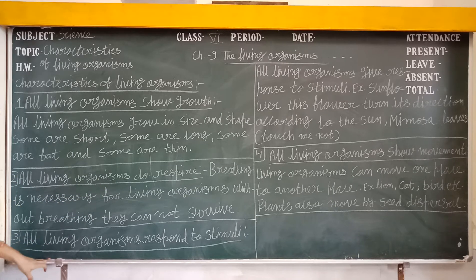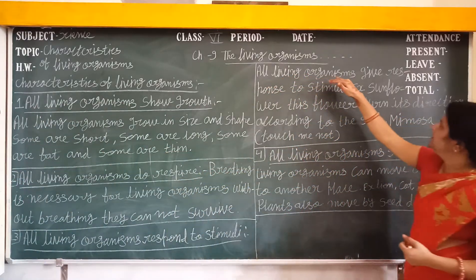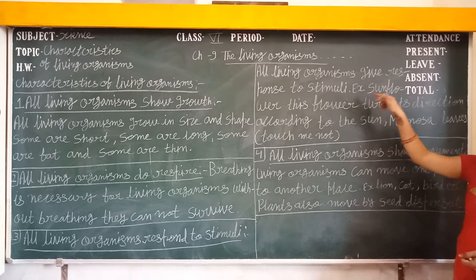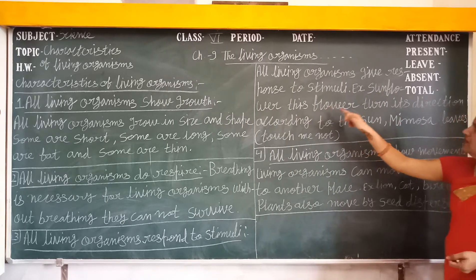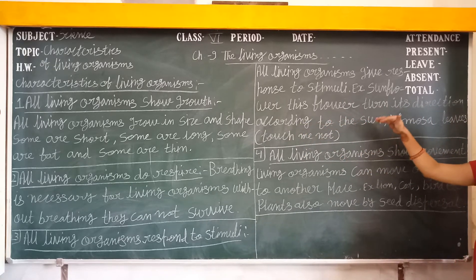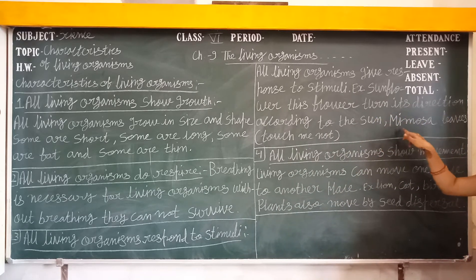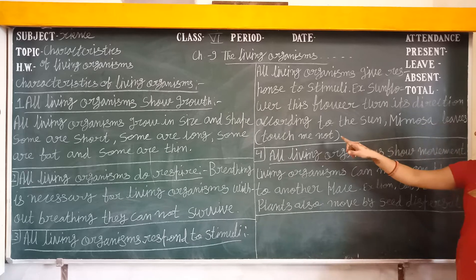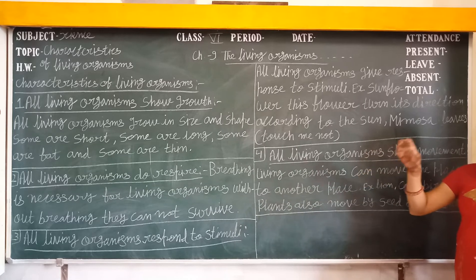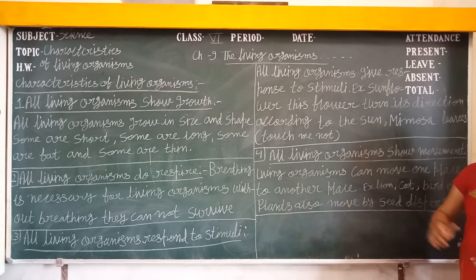Next, all living organisms respond to stimuli. For example, sunflowers turn their direction according to the sun, so we can say that living organisms respond to stimuli. Another example is mimosa, also known as 'touch me not.' When we touch its leaves, it shrinks, and when we remove our hand, it expands again. So they respond to stimuli.